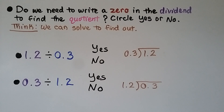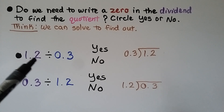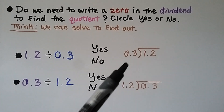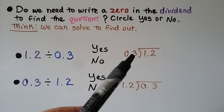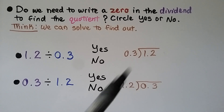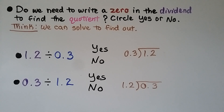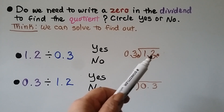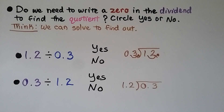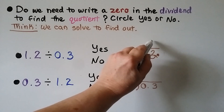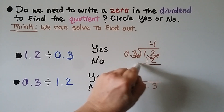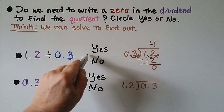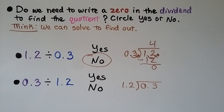Do we need to write a zero in the dividend to find the quotient? We need to circle yes or no. Here we have 1 and 2 tenths divided by 3 tenths. We can move this decimal one hop to the right, doing the same for the dividend. Now our equation is 12 divided by 3, which equals 4 because 3 times 4 is 12. We subtract and get zero. So no, we didn't need to add a zero in the dividend to solve that one.